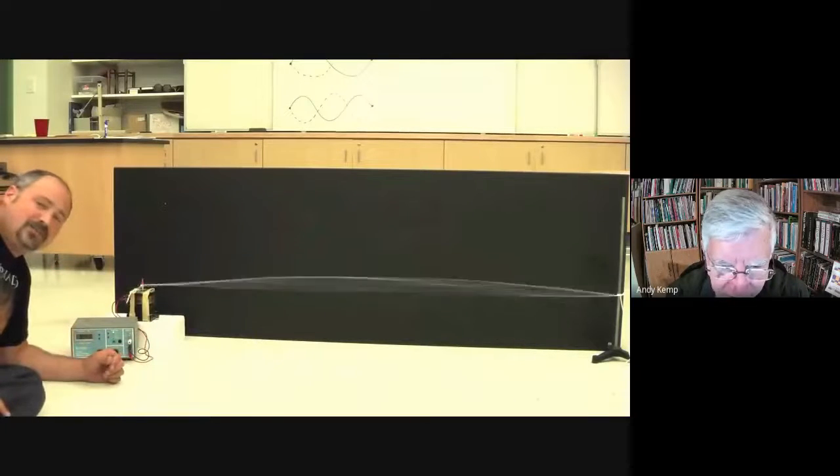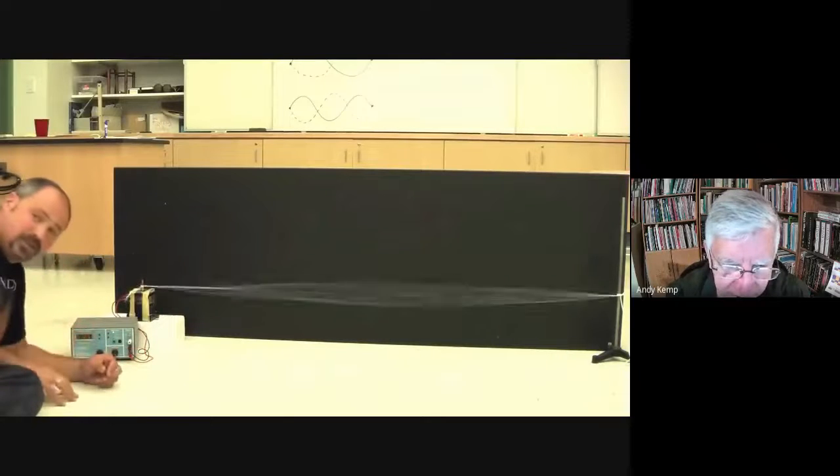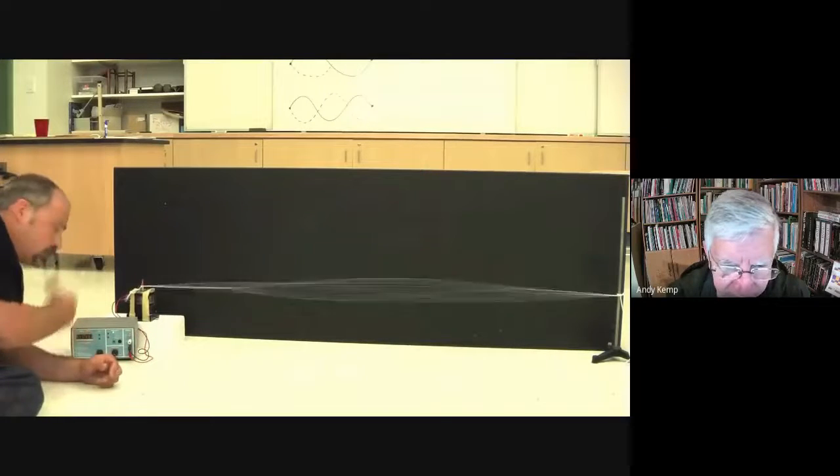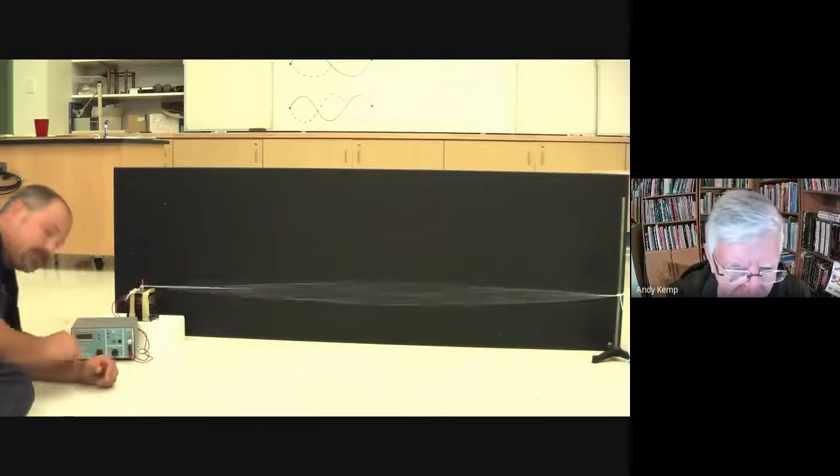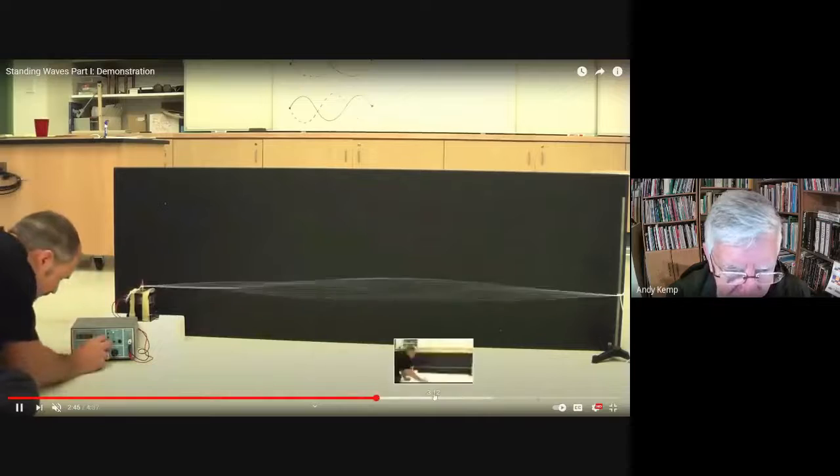This is called the fundamental for this particular setup, where you have two ends of a rope tied off. This is the fundamental frequency. So if it's at 5, when we turned it up to 10, we had a full wavelength. Here's half a wavelength. If you turn it up to 5, you have a full wavelength. If you turn it up to 15, let's see what happens.